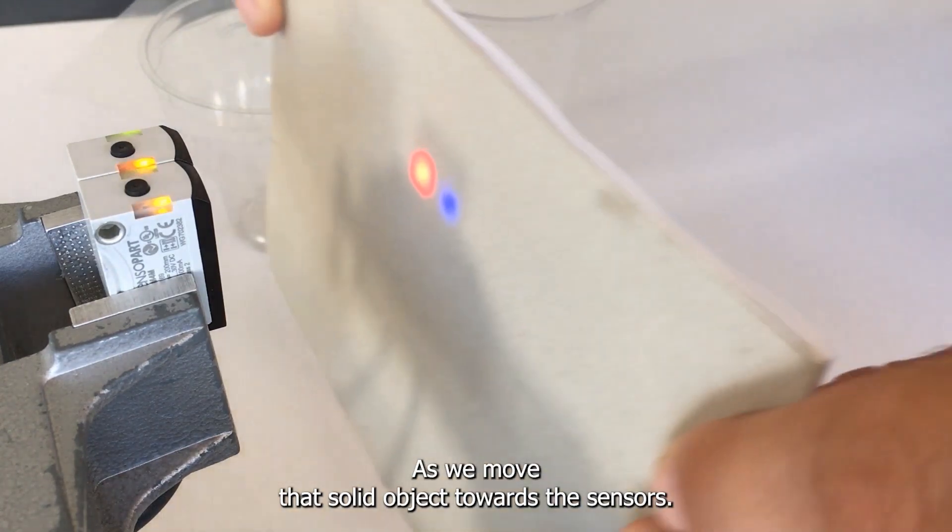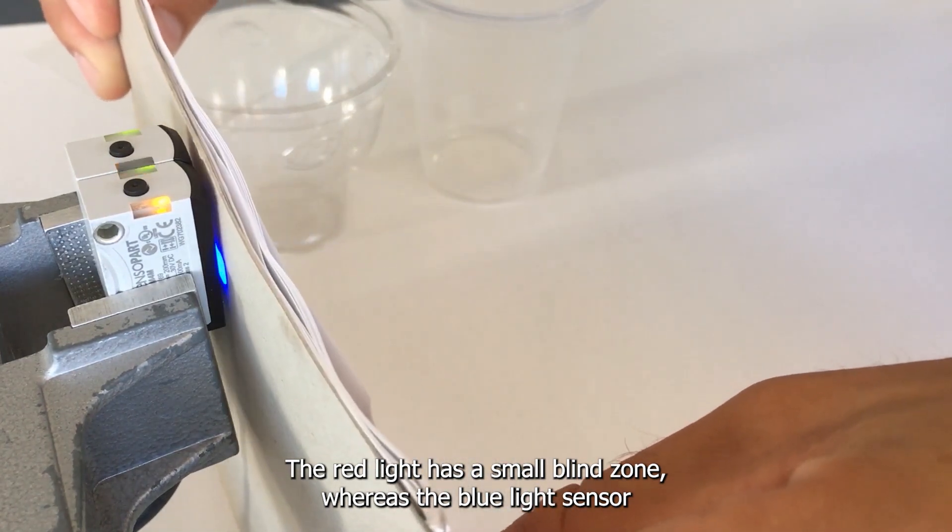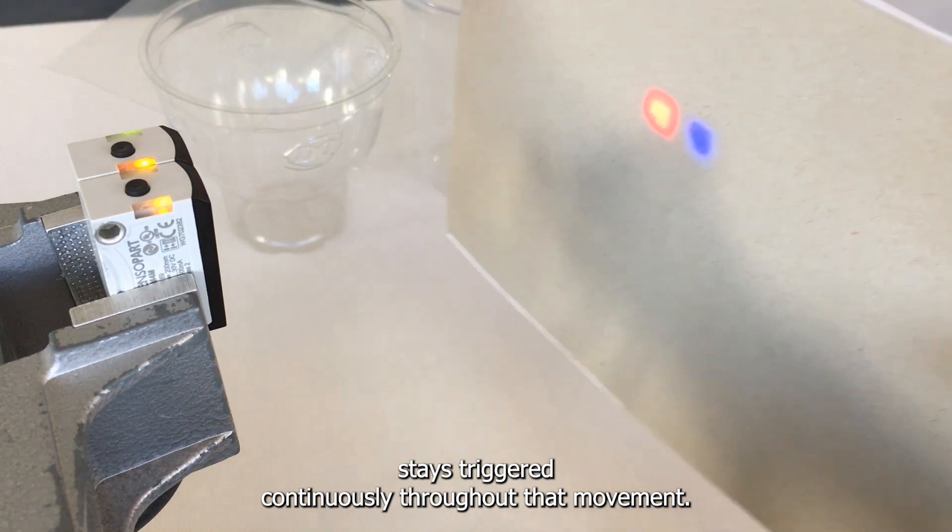As we move that solid object towards the sensors, the red light has a small blind zone whereas the blue light sensor stays triggered continuously throughout that movement.